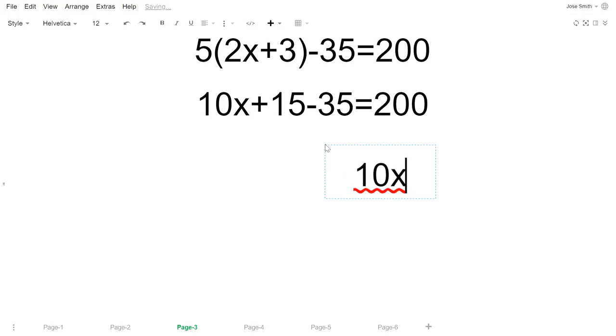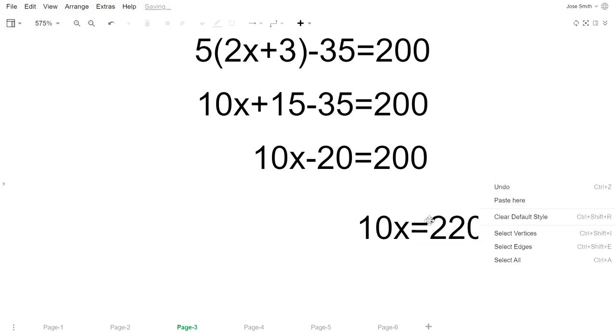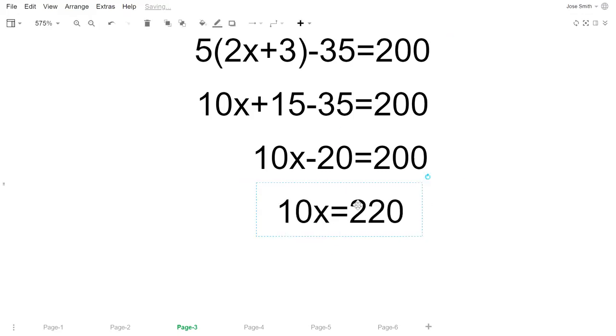Let's try to isolate that x by adding 20 to both sides, which will give you 10x equals 220. And our last step, let's isolate the x completely, so we divide both sides by 10 and that should give us x equals 22.